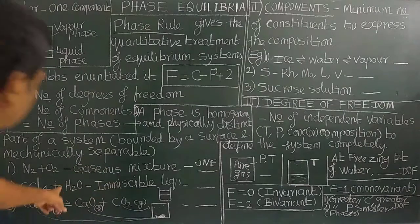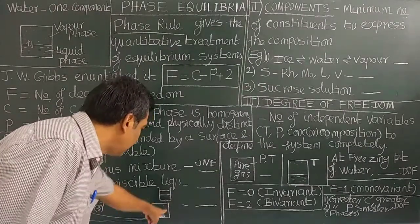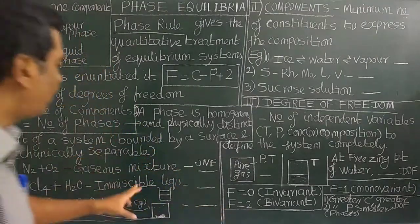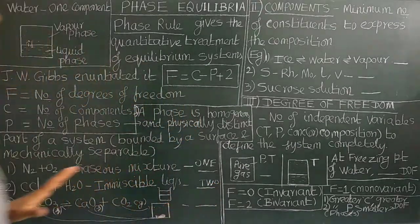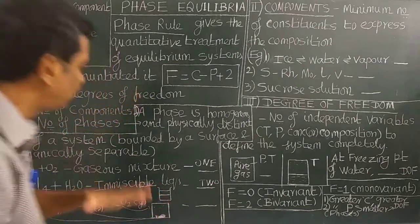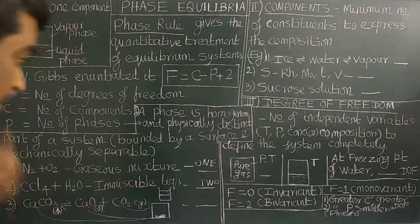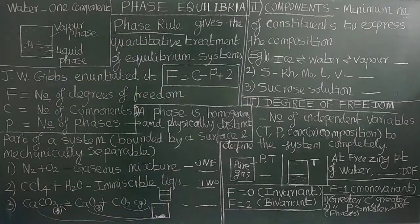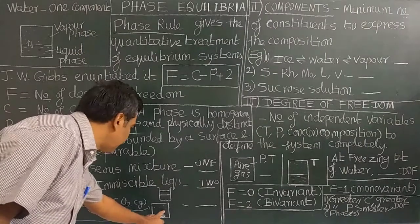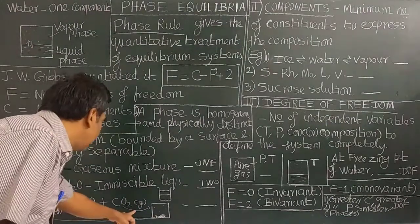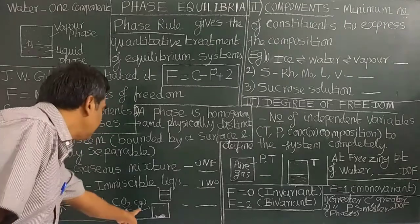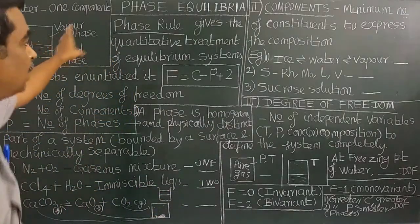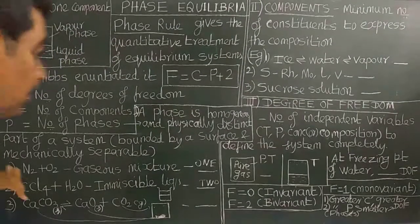However, if you look at CCl4 and water, there are two phases because they are immiscible liquids. For calcium carbonate, we take a heterogeneous equilibrium system. It exists in a solid state and a gaseous phase — that is a heterogeneous chemical equilibrium. If it is liquid-vapor, it is a heterogeneous physical equilibrium.